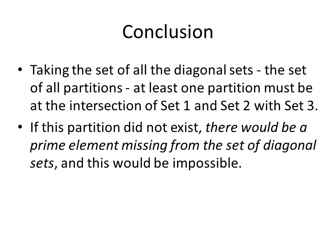And so we have it, the solution set. Taking the set of all the diagonal sets, the set of all partitions, at least one partition must be at the intersection of set 1 and set 2 with set 3. If this partition did not exist, there would be a prime element missing from the set of diagonal sets and this would be impossible.